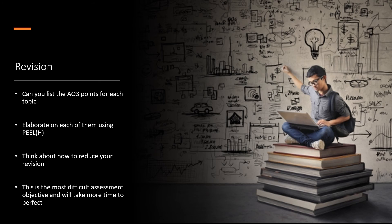For revision and exam preparation, start by listing the AO3 points for each topic — can you pull a topic out of a hat and write down the AO3 points you'd include? Then elaborate on them and write out your PEEL and PELH paragraphs. Think about how to reduce your revision by going back to those generic points for theories and treatments. Remember, this is the most difficult assessment objective and will take more time to perfect than your AO1, because it's about your level of elaboration and depth. Good luck with all your preparation and the exams.